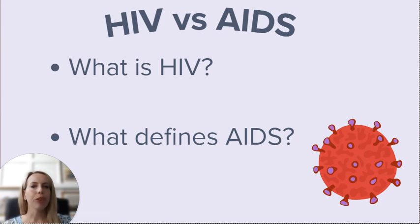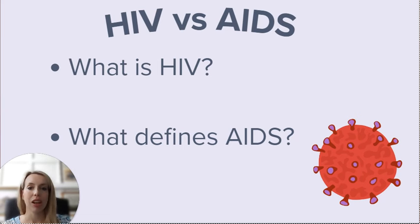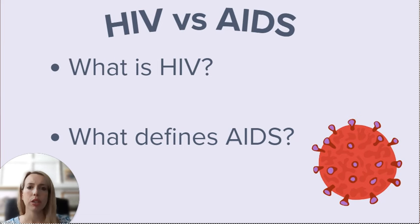HIV refers to human immunodeficiency virus, which is a retrovirus that attacks the immune system's CD4 T lymphocyte cells. The virus incorporates itself into the DNA of CD4 cells and then lives on in the lymphoid tissue throughout the body, so it is considered incurable.